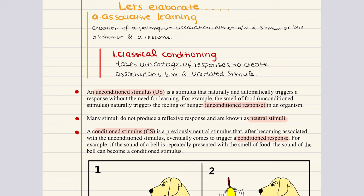Classical conditioning works first and foremost because some stimuli cause an innate or reflexive physiological response. For example, we reflexively salivate when we smell fresh bread baking in an oven, or we may jump or recoil when we hear a loud noise. Any stimulus that brings about such a reflexive response is called an unconditioned stimulus. And that innate or reflexive response is called an unconditioned response. Now, some stimuli don't produce a reflexive response. Those are known as neutral stimuli.